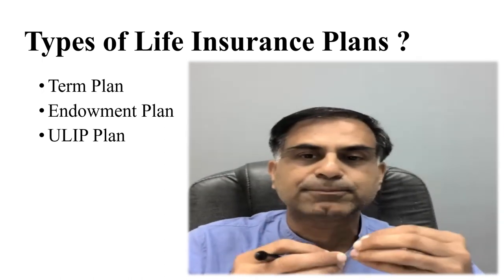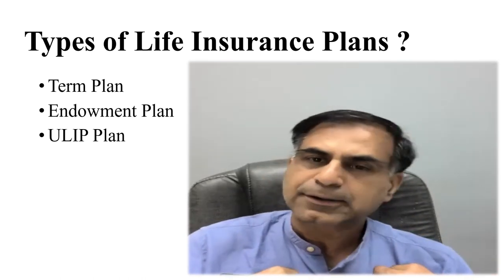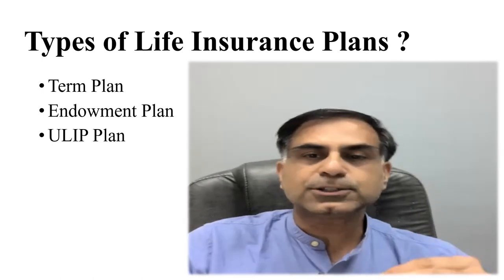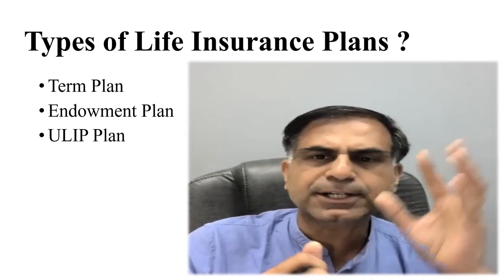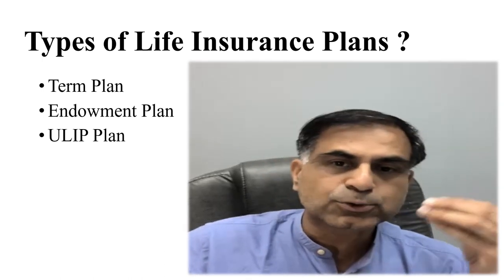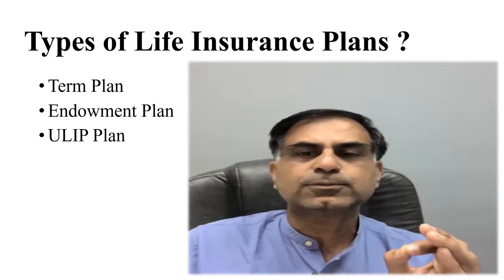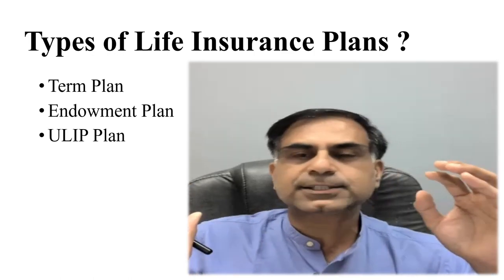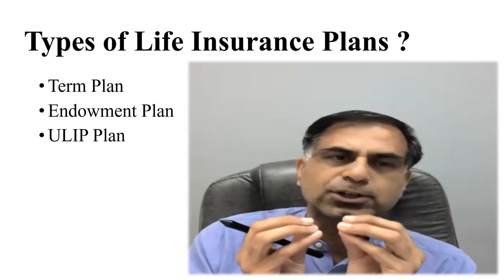What is an endowment plan? In our country, insurance has traditionally been sold as an investment product, whereas in my opinion, insurance is a risk cover product, not an investment product. Companies offer the return of capital after a certain period with some appreciation — for example, you keep paying 20,000 to 50,000 a year and after 30 or 40 years they return a certain amount of capital. That is an endowment plan. A ULIP plan differs in that it invests your premium, after reducing the risk cover portion, into a mutual fund kind of investment which can give higher returns compared to a traditional endowment plan.